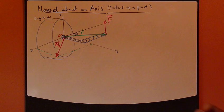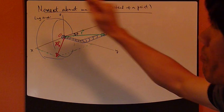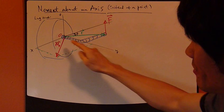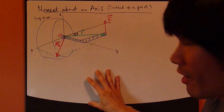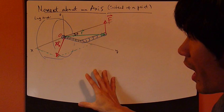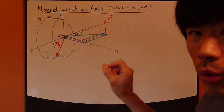The next important topic is moment about an axis. Now all this discussion so far with the definition R cross F can be applied to a moment about a point.